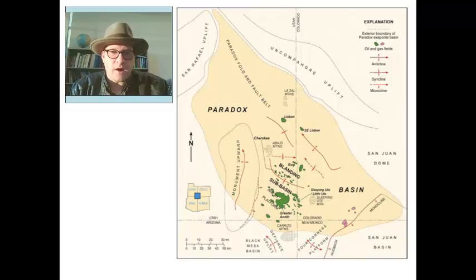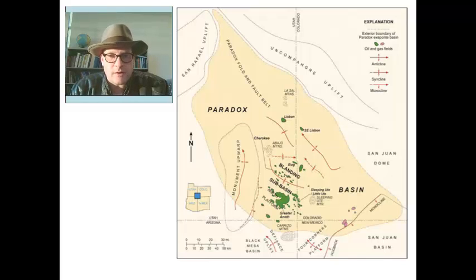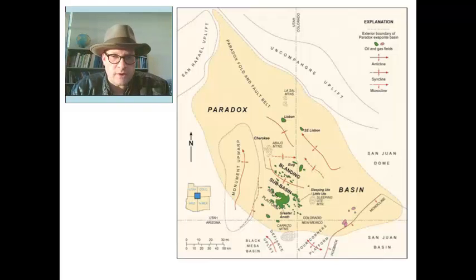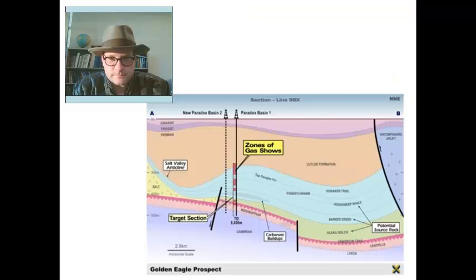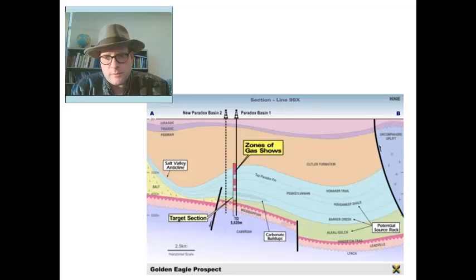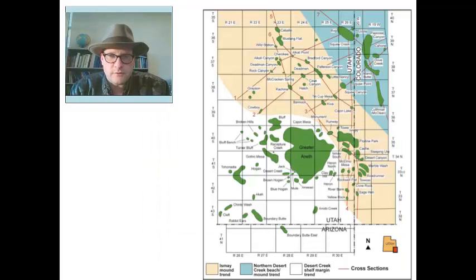Now switching gears to talk about where in the Paradox Basin you find oil and gas. The units we've been discussing around Moab don't have good source rocks for oil or natural gas to develop. But heading south, you get into a number of oil fields in the southeast corner of Utah, right out near Blanding. This part of the Paradox Basin has much of the oil and natural gas of the region, with production about 5,000 feet below surface mostly within the Paradox Formation itself, below the Cutler Formation and above some underlying Mississippian rocks.